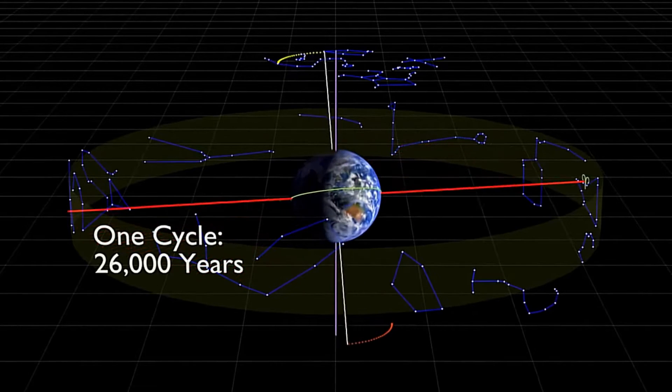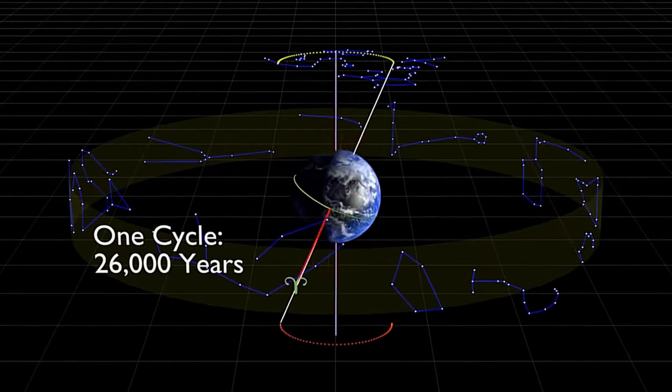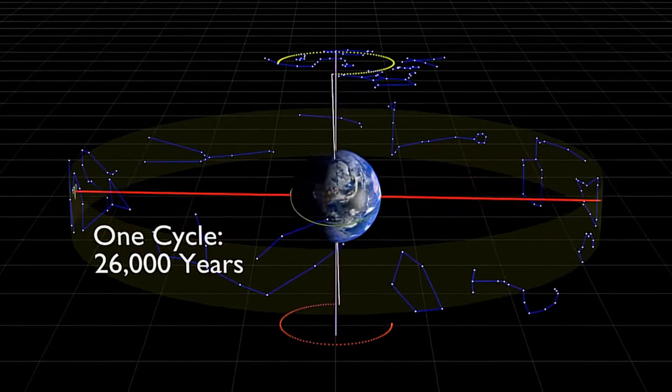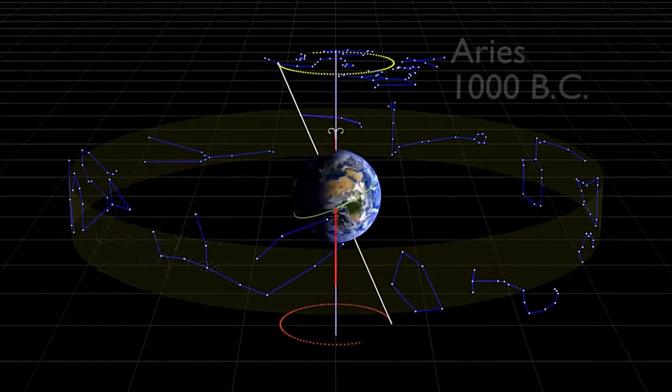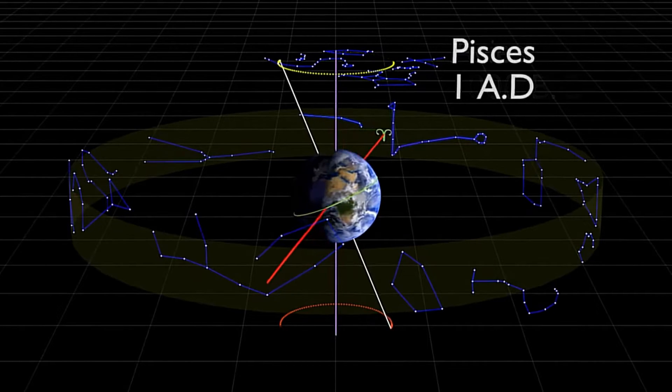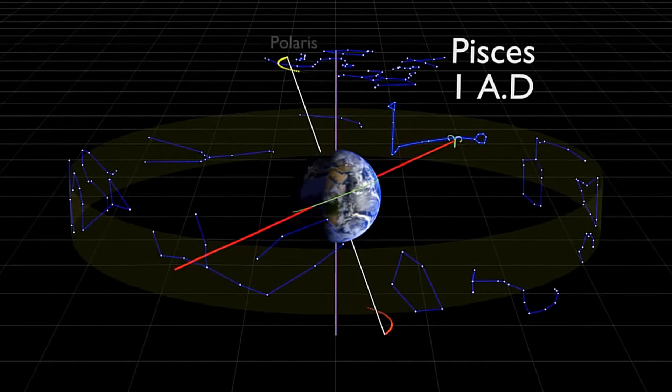In this lecture, I want to talk about precession. In astronomy, there are two different effects of precession that we'll observe: the precession of the equinoxes and the precession of the celestial poles.